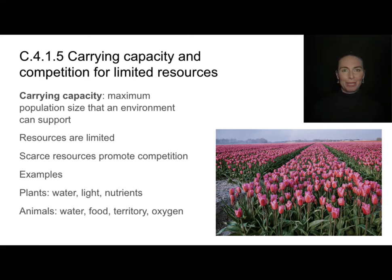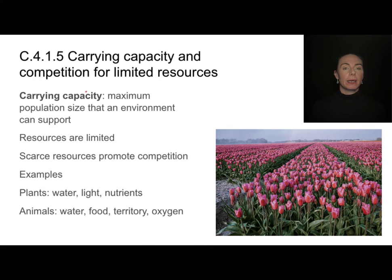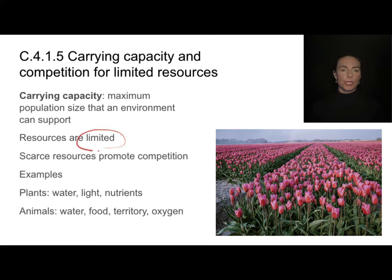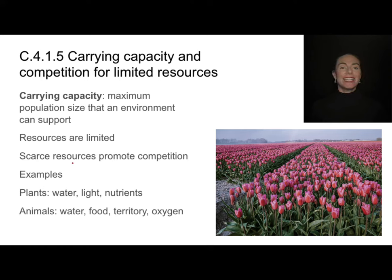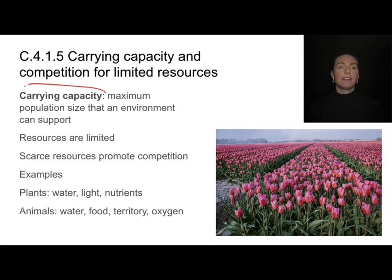Now that we've talked about estimating population size, let's talk about population growth. In a given environment, every population has what's called a carrying capacity — specific to each population and each habitat. It's the maximum population size that an environment can support, because there are limited resources. For plants that might mean limited water, light, or nutrients; for animals it might mean water, food, territory, or oxygen. These scarce resources promote competition, which determines which individuals survive and reproduce and how many an environment can support.